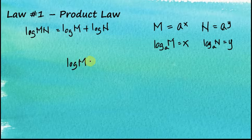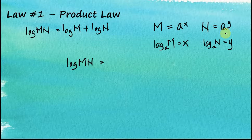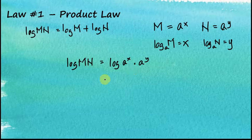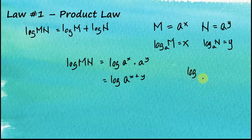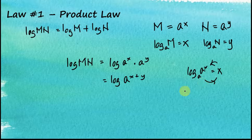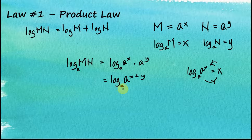Starting with log of m times n, we substitute m = a^x and n = a^y, so it becomes log of a^x times a^y. We know that a^x multiplied by a^y equals a^(x+y). From previous videos, we learned that log base a of a^x = x.